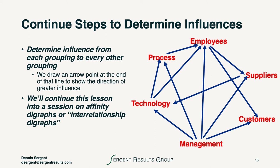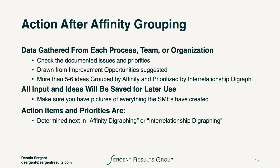We'll continue this exercise in the next lesson on interrelationship digraphs — or what we use as shorthand: affinity digraphs. It's an opportunity for us to think about the data we gather from every process, every team or organization. We check the documented issues and priorities, drawn from the improvement opportunities suggested by subject matter experts, and take more than five to six ideas, group them by affinity, and prioritize them by this interrelationship digraph.